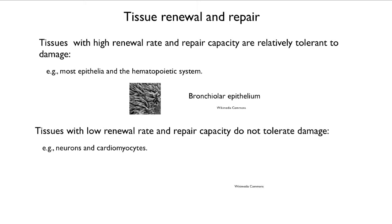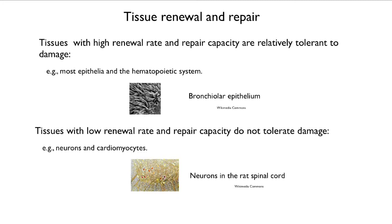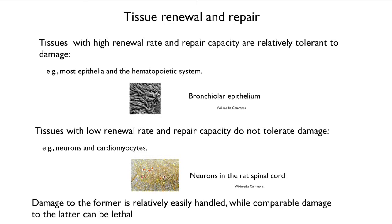Tissues that have low renewal rate and repair capacity don't tolerate damage very well. Neurons and cardiomyocytes are examples. Here's a cross section of a rat's spinal cord showing the neurons. Neurons don't really have nearly the regenerative capacity of other cells — they have more than had originally been thought, but when damaged, it's often a catastrophe. Damage to an epithelial cell is pretty easily handled, whereas damage to neurons or heart muscle cells can kill the organism.